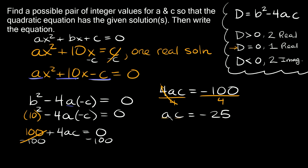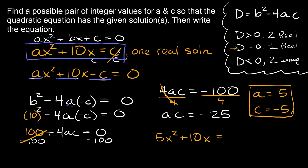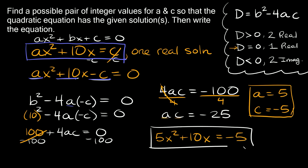Now we can pick whatever values we want for a and c to make sure the product equals negative 25. We can say a is equal to positive 5 and c is equal to negative 5. The last thing we need to do is write the original equation: 5x squared plus 10x is equal to negative 5.